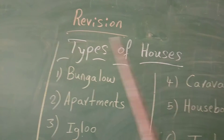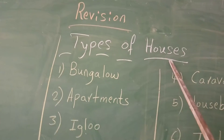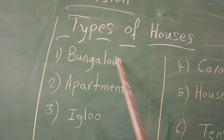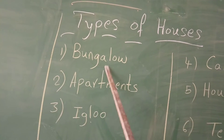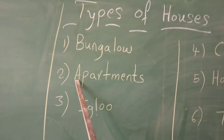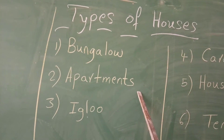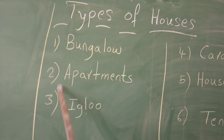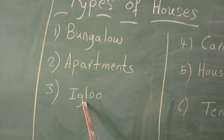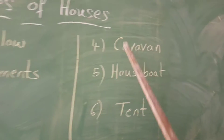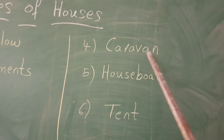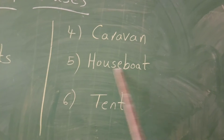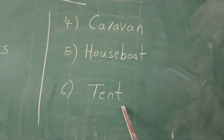Types of houses. What is this? Bungalow — B-U-N-G-A-L-O-W. Apartments — A-P-A-R-T-M-E-N-T-S. Igloo — E-G-L-O-O. Caravan — C-A-R-A-V-A-N. Houseboat — H-O-U-S-C-B-O-A-T. Tent — T-E-N-T.